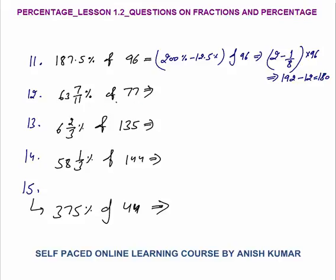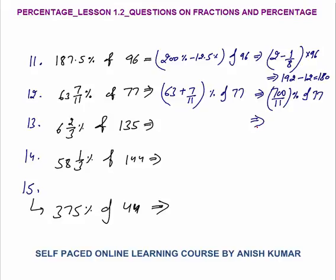63 7/11% of 77 — this equals 63 plus 7/11%. Taking LCM, if you solve this you get 700/11% of 77. Anything you want to remove the percentage, divide by 100. So 700/11% becomes 7/11. So 7/11 of 77 — this equals 7 × 7 = 49, which is your final answer.